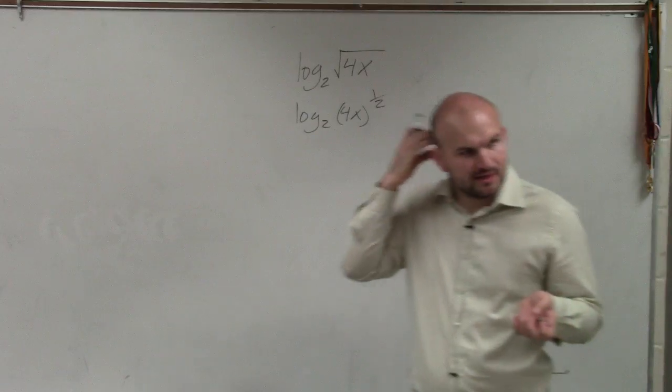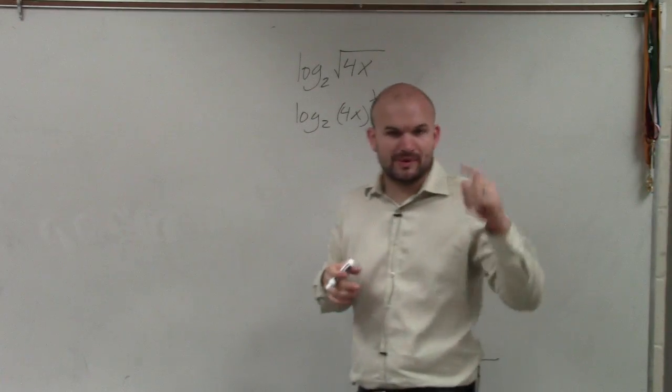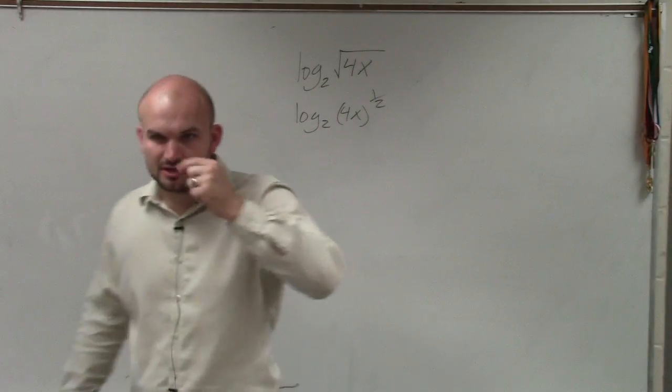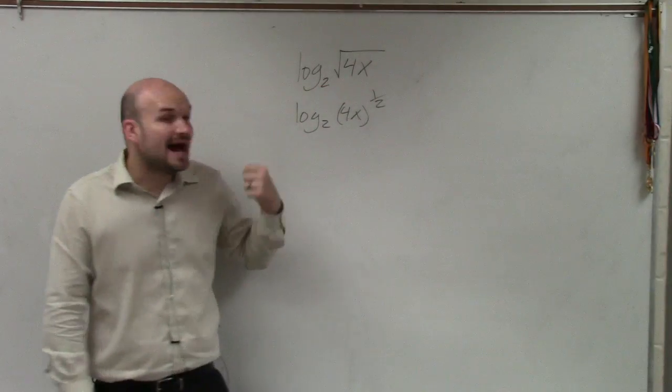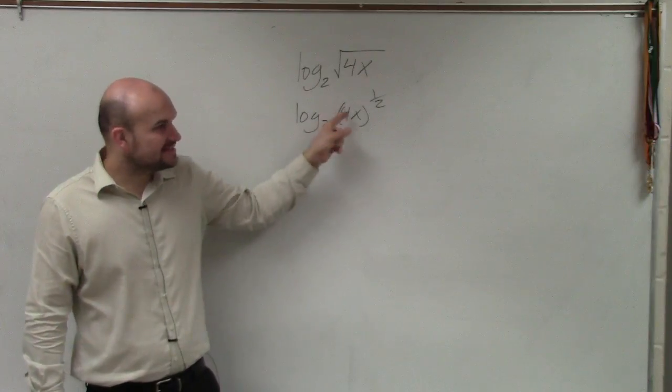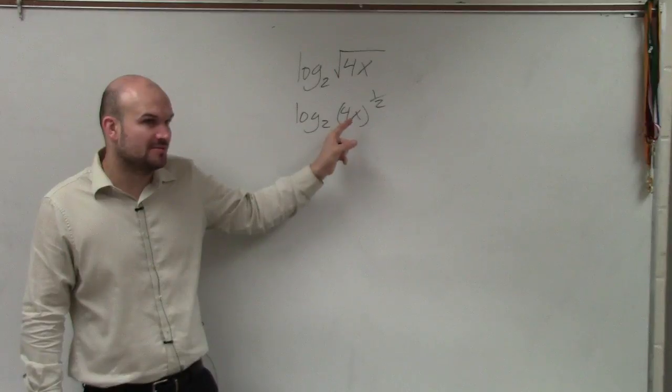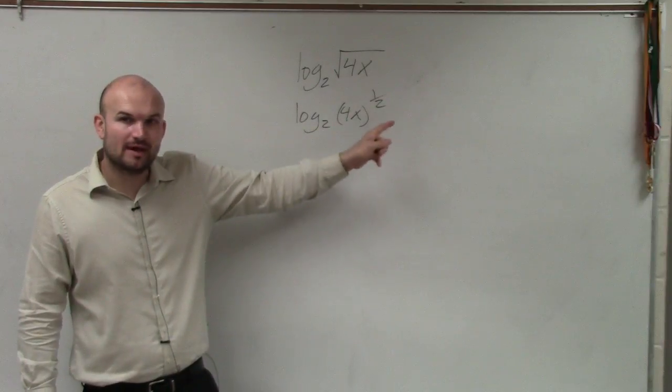And this is just something that we went over when we were talking about simplifying and solving radical expressions. Now, the problem is I can't separate this. I can't separate the 4 times the x into two separate logarithms because they're both raised to the 1 half.